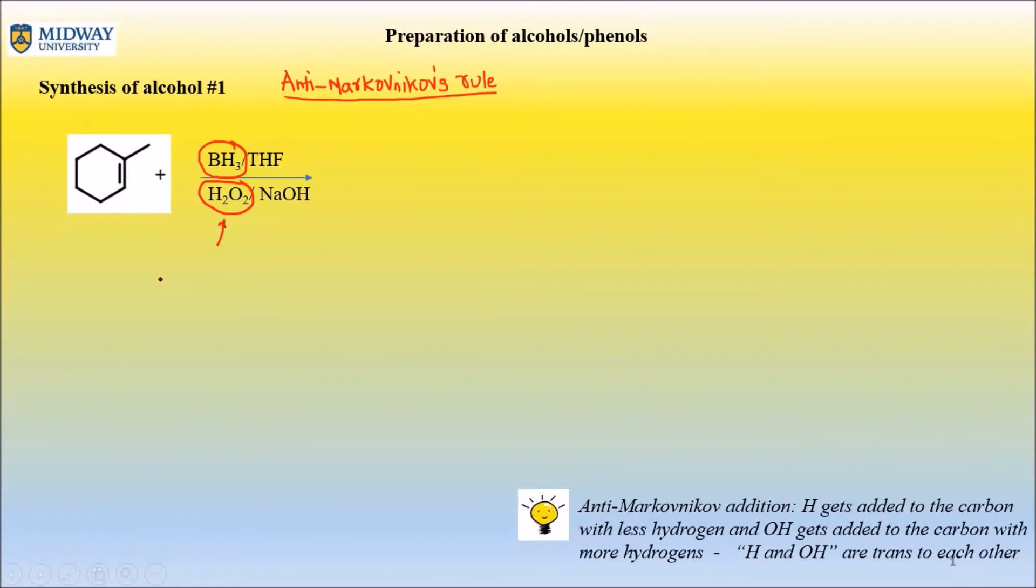When you see BH3 and H2O2, this is hydrogen peroxide, you should know right away this is anti-Markovnikov. That means the hydrogen gets added to the carbon with less hydrogens and the OH gets added to the carbon with more hydrogens. More importantly, the hydrogen and the OH add trans to each other. That's very important.